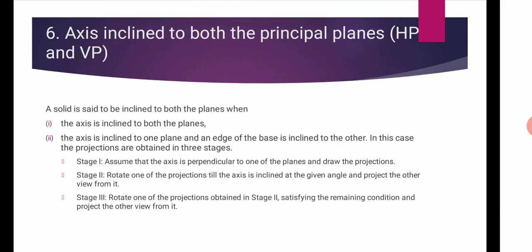Then the axis inclined to both planes, horizontal and vertical planes. The axis is inclined to both planes when the axis is one plane and the edge of the base is inclined to another. In this case, the projection is obtained in three stages. In stage one, assume that the axis is perpendicular to one of the planes and draw its projection. In stage two, rotate one of the projections till the axis is inclined at the given angle and project the view from it. In stage three, rotate one of the projections obtained in stage two, satisfy the remaining conditions, and project the other views from it.